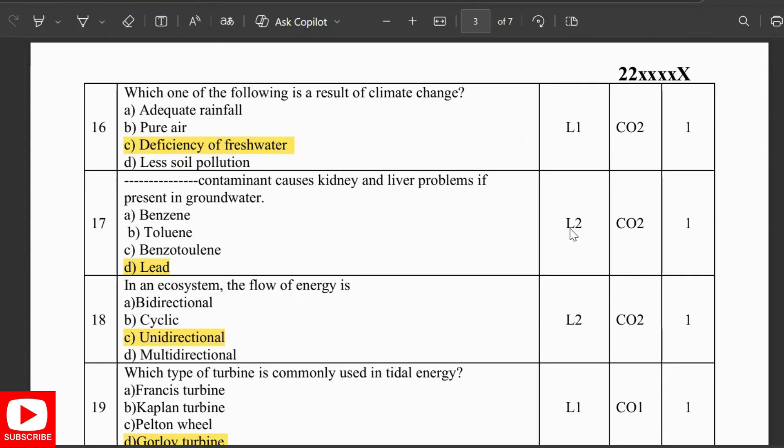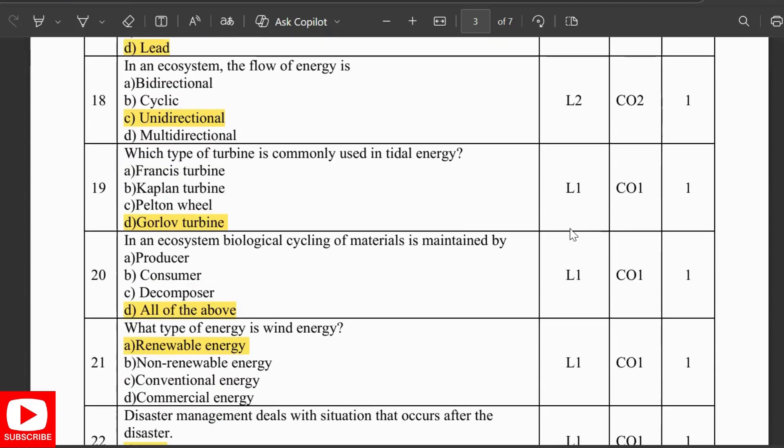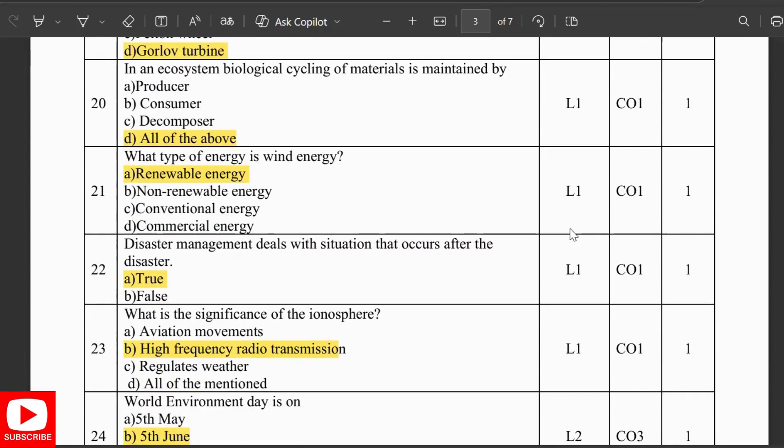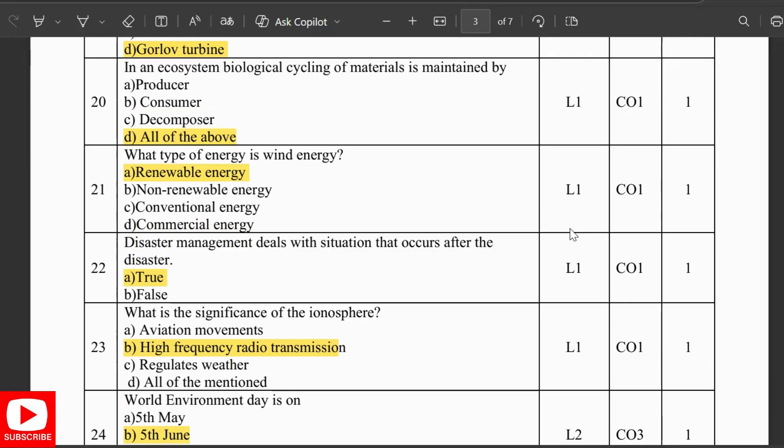In an ecosystem, the flow of energy is unidirectional. Which type of turbine is commonly used in tidal energy? It is Gorlov turbine. In an ecosystem, biological cycling of materials is maintained by producer, consumer, and decomposer. What type of energy is wind energy? Renewable energy.